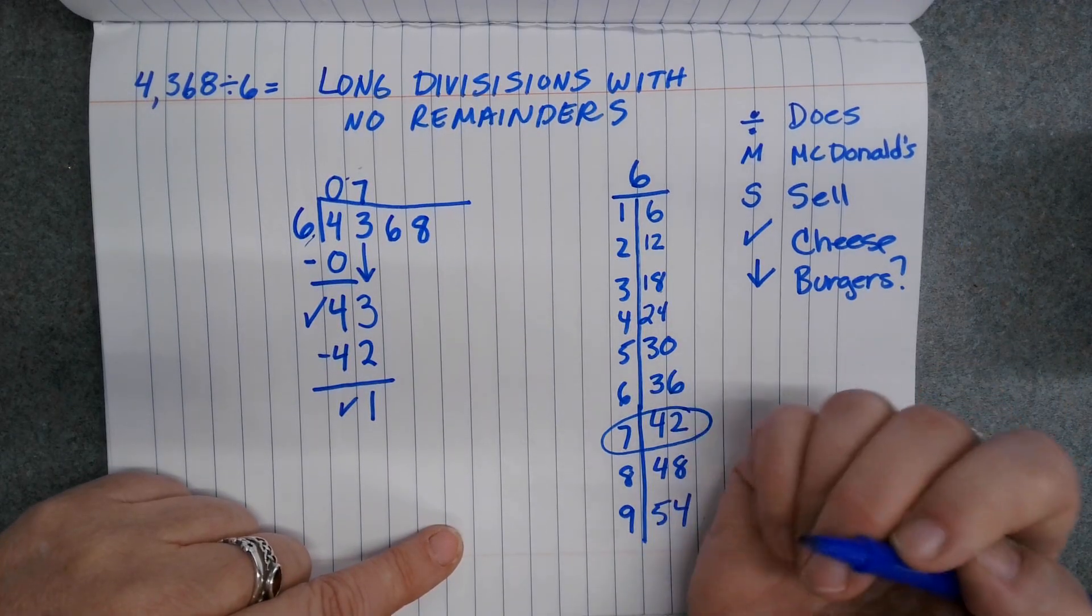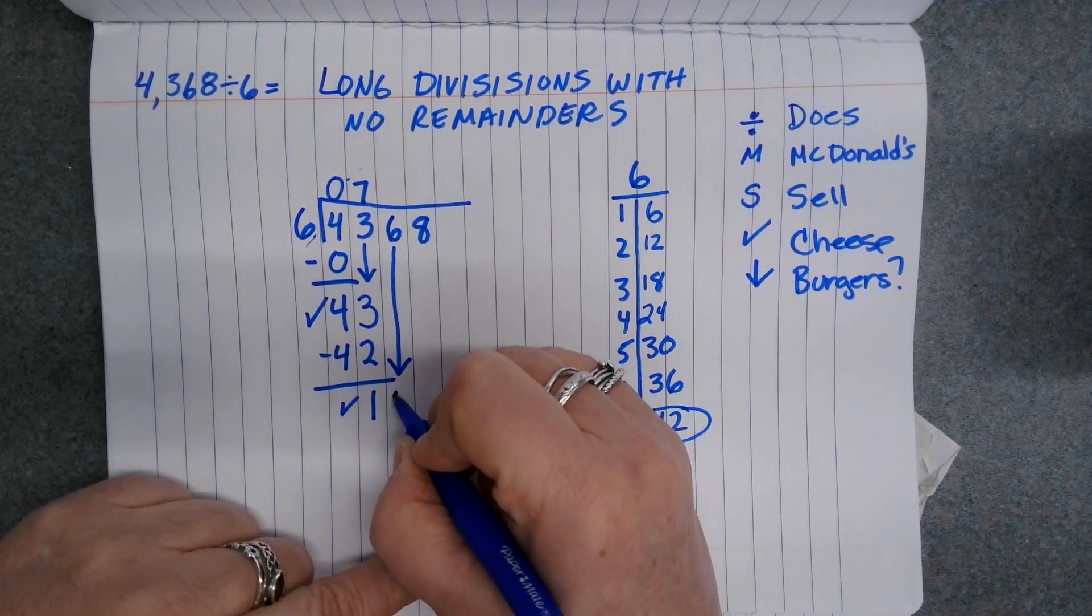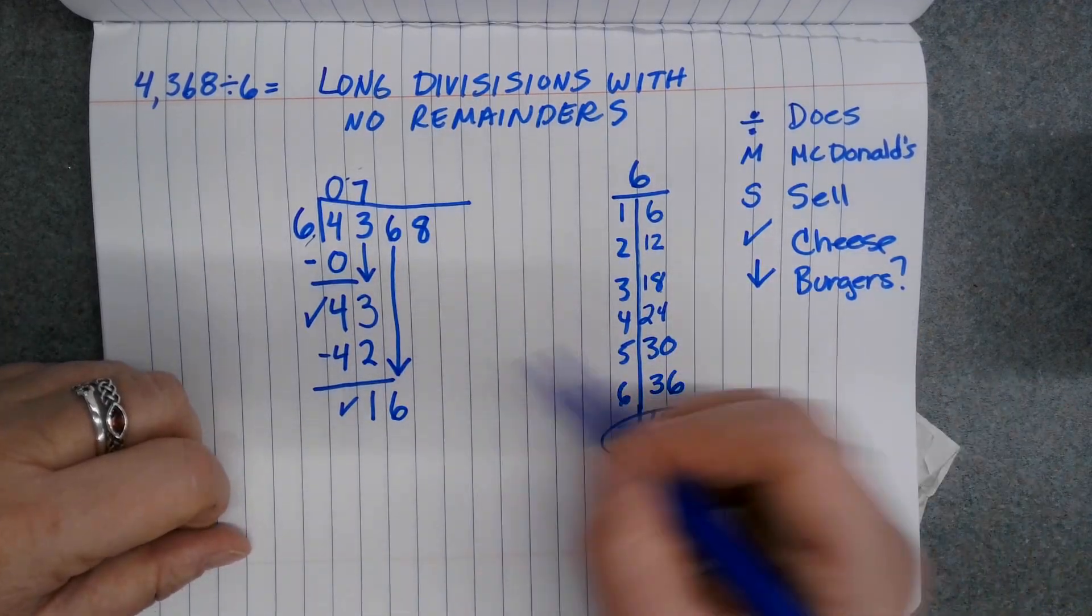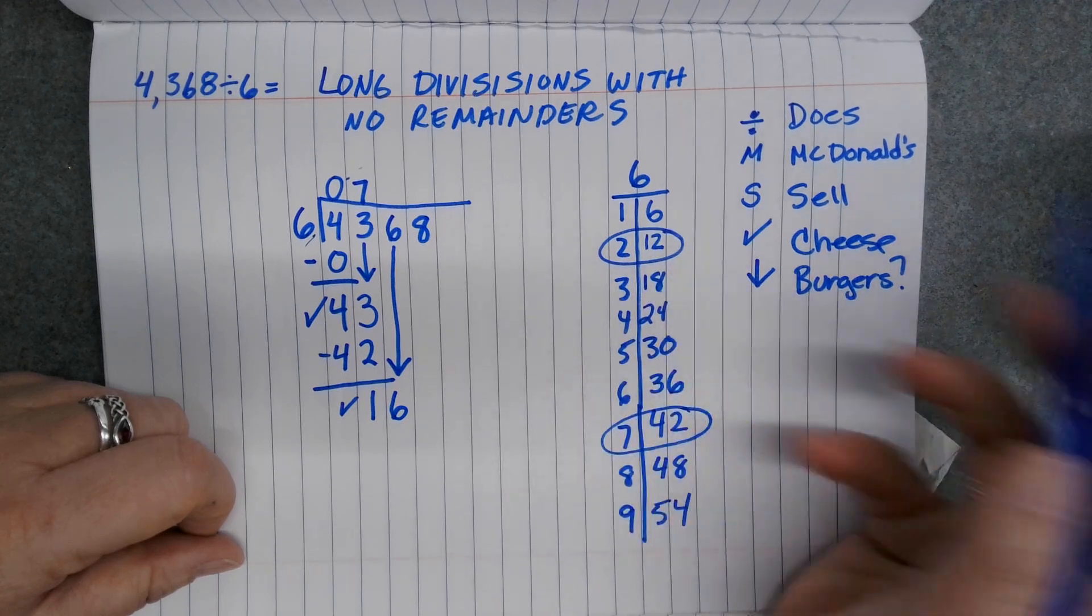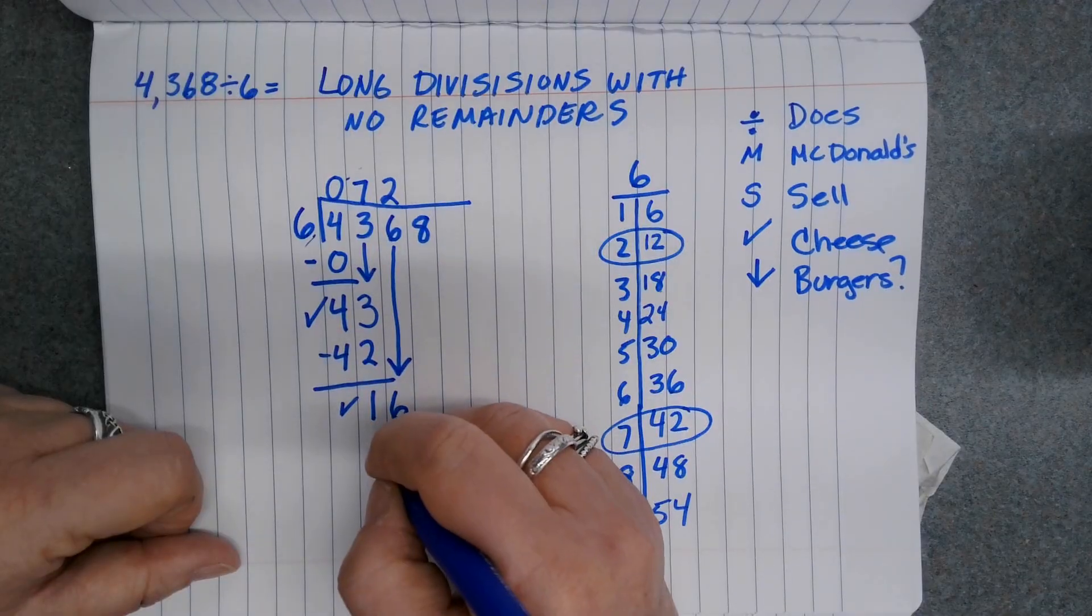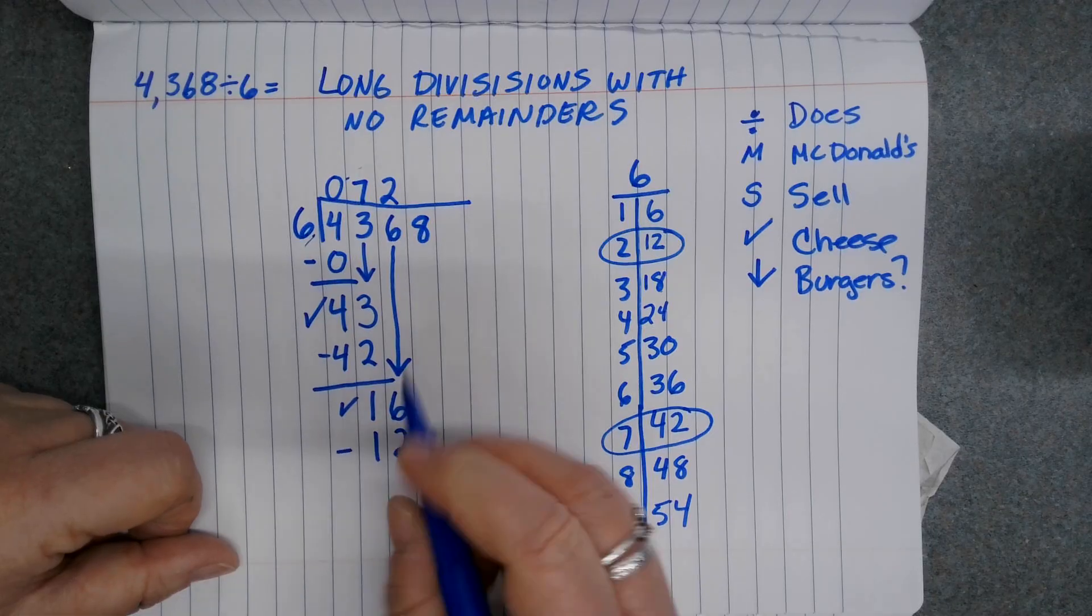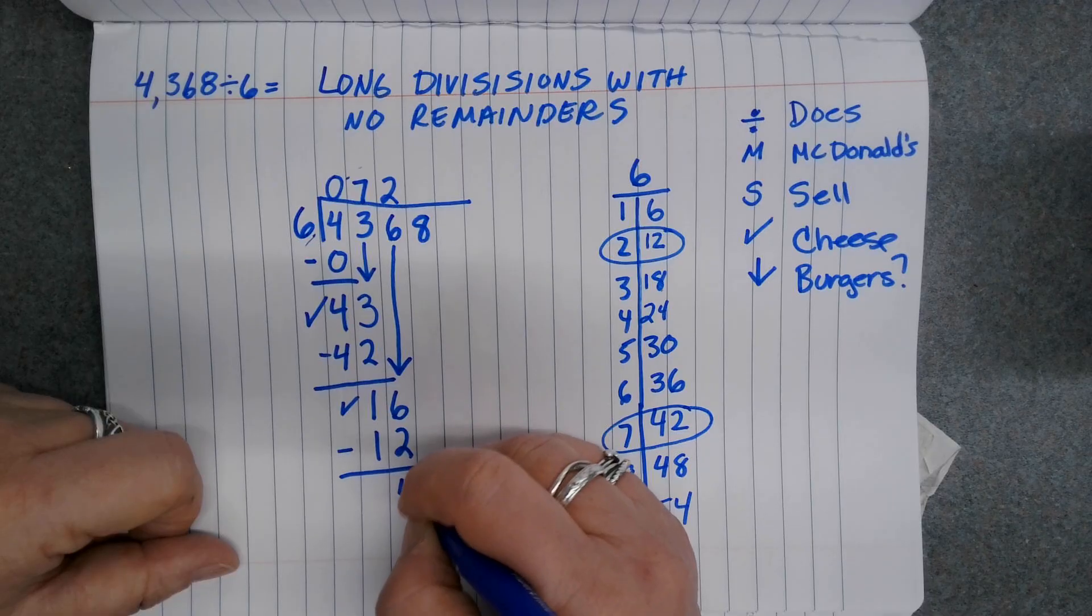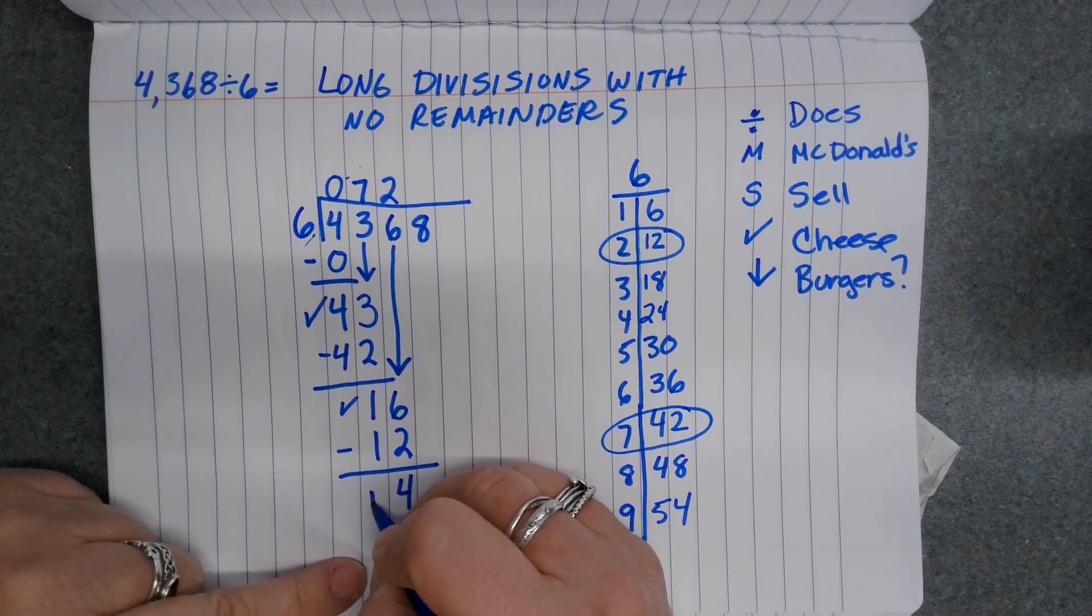Now I'm going to bring down my next number, which is a 6. I'm going to ask myself how many groups of 6 can I make out of 16. Let me look at my chart. I could make 2 groups of 6. So I'll put 2 up here. I'm going to multiply: 6 times 2 is 12. Now I'll subtract. 6 minus 2 is 4. I'm going to double check. Is 4 less than 6? Yes, it is. Check. I'm good.